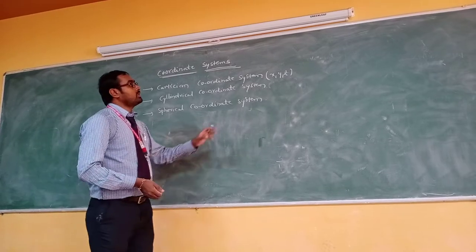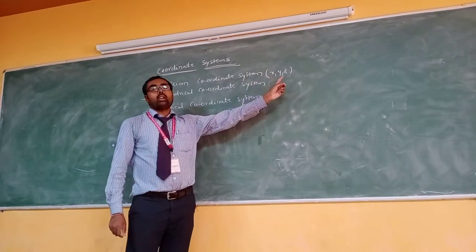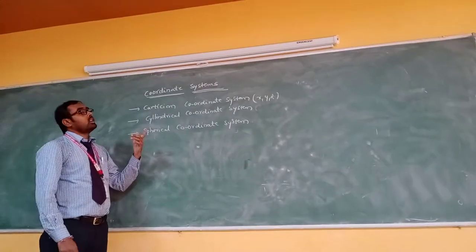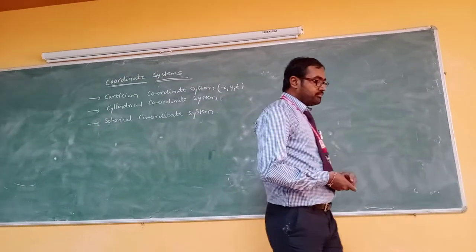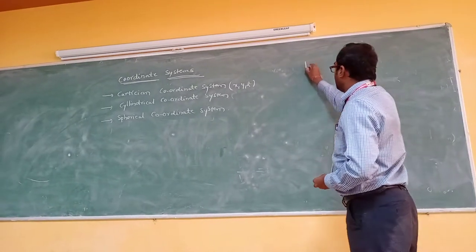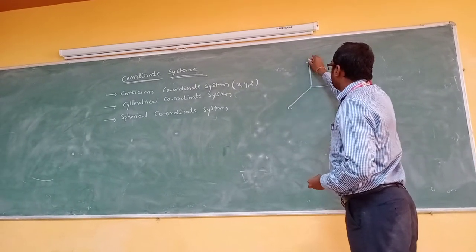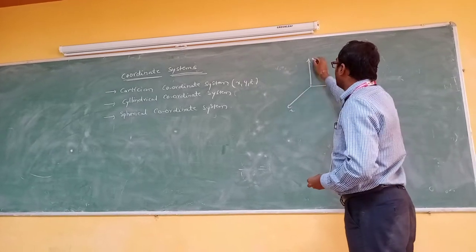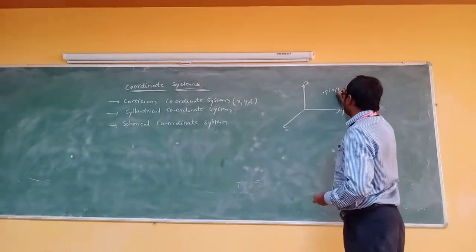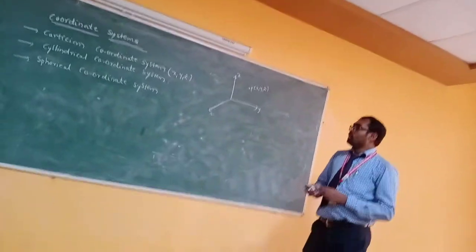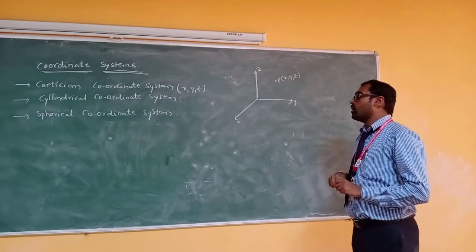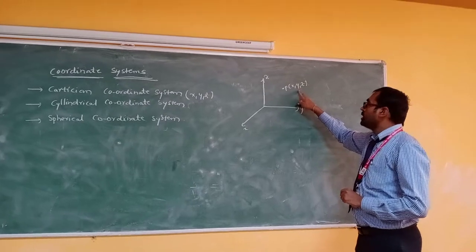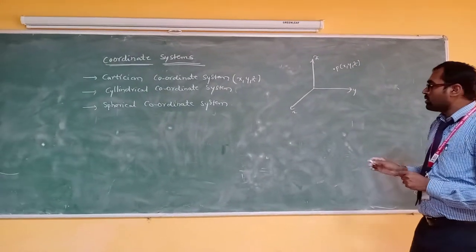The first and basic coordinate system is the Cartesian coordinate system. The Cartesian coordinate system components are X, Y, and Z. We can also call it the rectangular coordinate system because the shape of this coordinate system is rectangular. If we take any point on this coordinate system, it has an X component, a Y component, and a Z component.